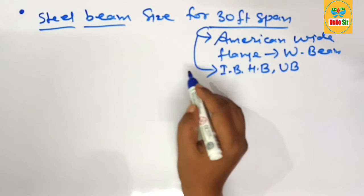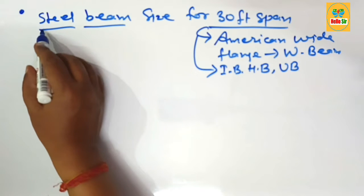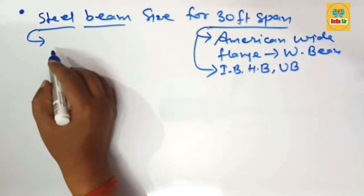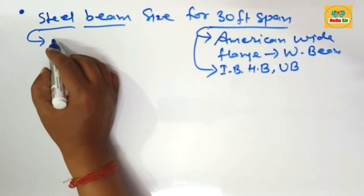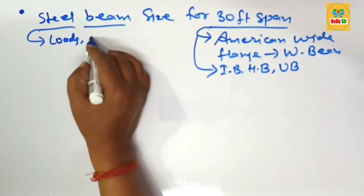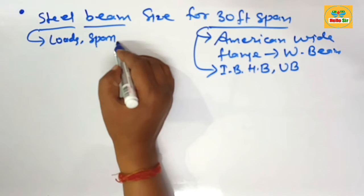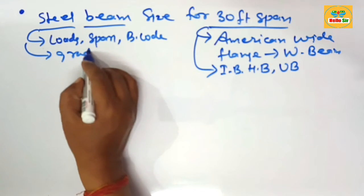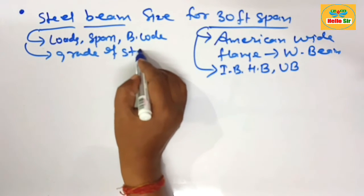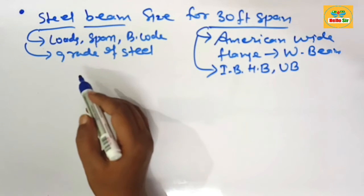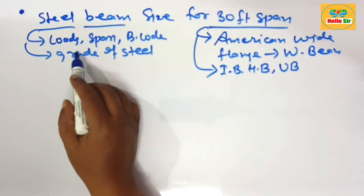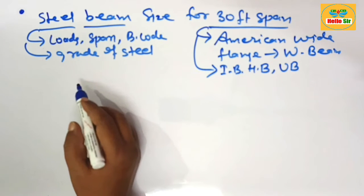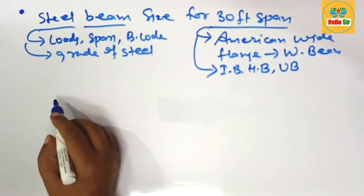It is used in steel industry for civil construction work. The size of steel beam required for 30 foot span depends on various factors like load condition, the span between the support, the building code in your area, and the grade of steel. These are the major factors that will decide the accurate size of steel beam required for a specific span.